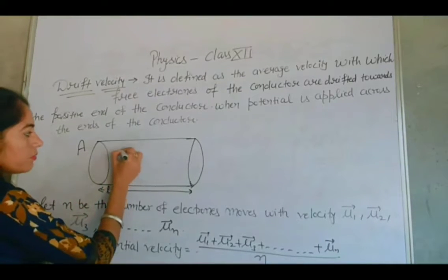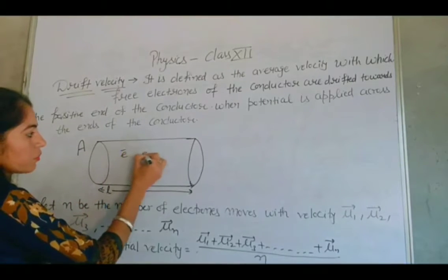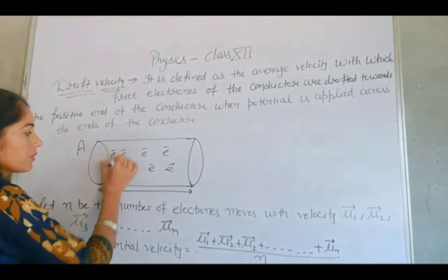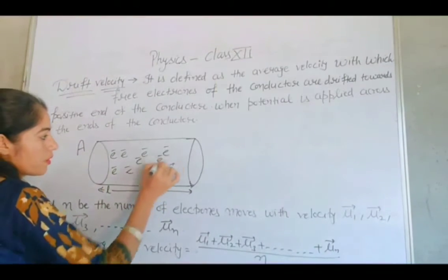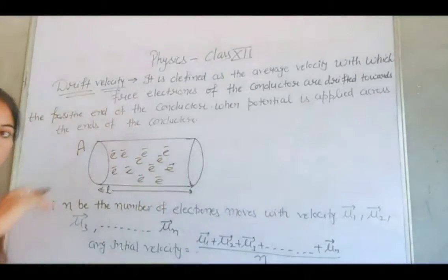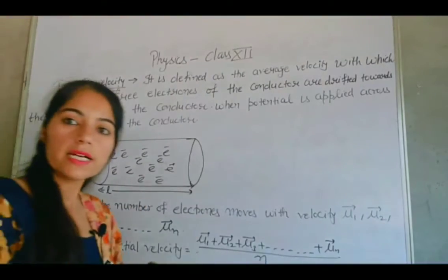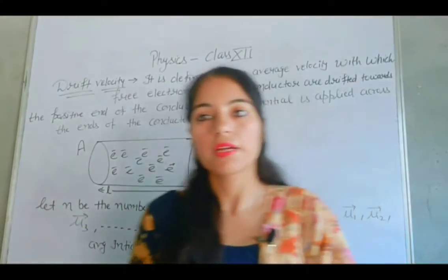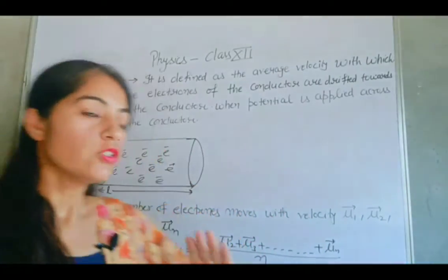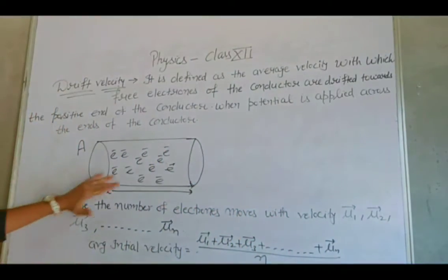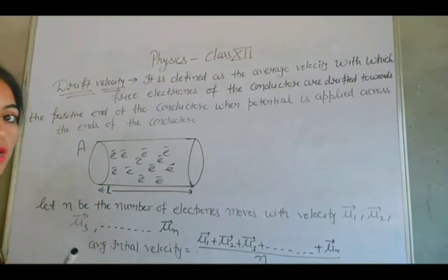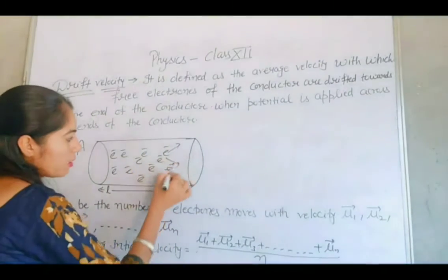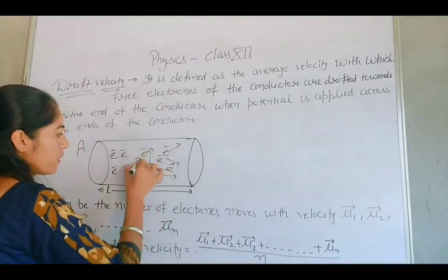There are a number of electrons in this conductor — bahut saare electrons hain. As we know, in a conductor the electrons are in random motion. These electrons are in motion and they randomly move in different directions.